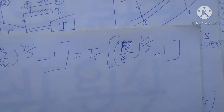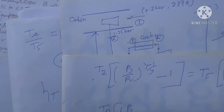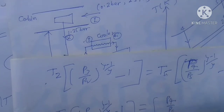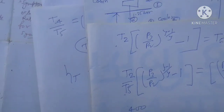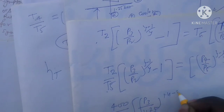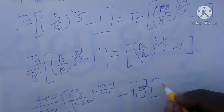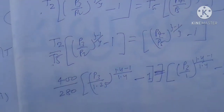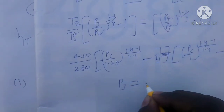Substituting all values — T2 = 400 K, T5 = 280 K — and putting P3/P2 and P4/P5 into the equation with gamma minus 1 divided by gamma, and solving for P3, after all calculations we find P3 equals 2.24 bar.